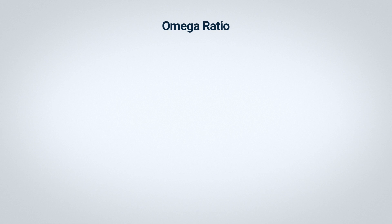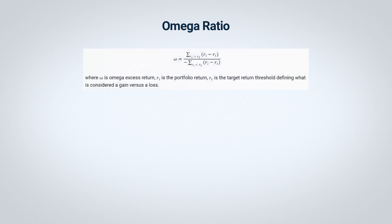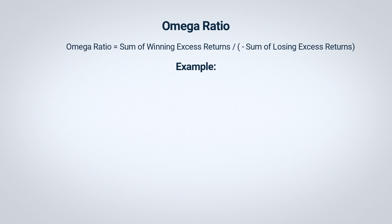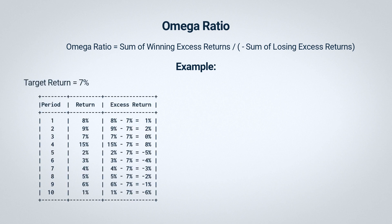This target could be anything we choose — a risk-free rate, a market index, or another benchmark. To calculate the Omega Ratio, we take the sum of all the gains, called winning excess returns, and divide it by the absolute sum of all the losses, or losing excess returns. Let's break this down with an example. Imagine we have a portfolio with returns over 10 periods and we're targeting a return of 7%.